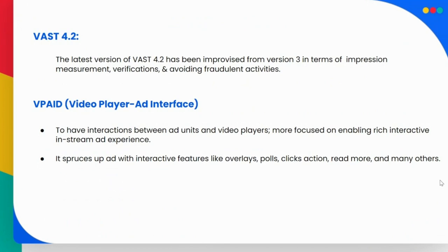Most people are still sticking with VAST version 3, which is quite popular. VAST 4.2 is more concentrated on impressions - when you're promoting your product and everyone is seeing it, you need tracking, measurement, and verification. Those things are concentrated in version 4.2.